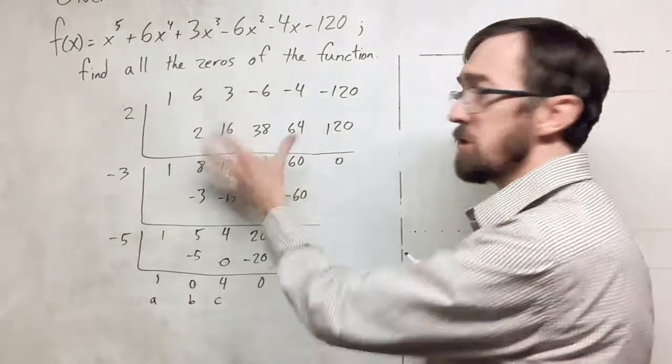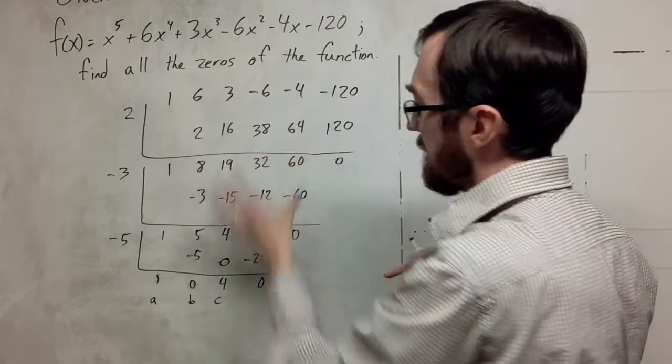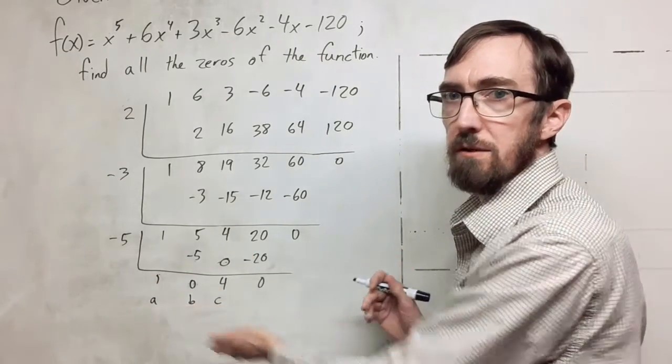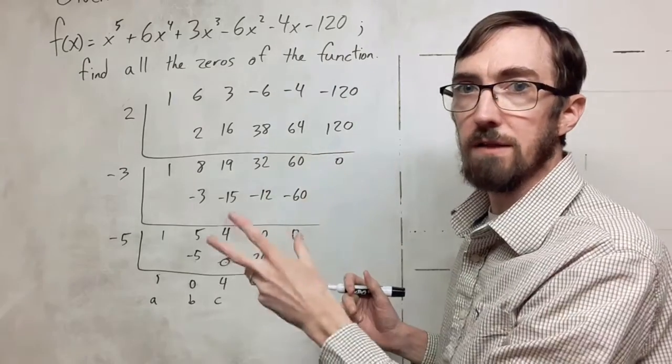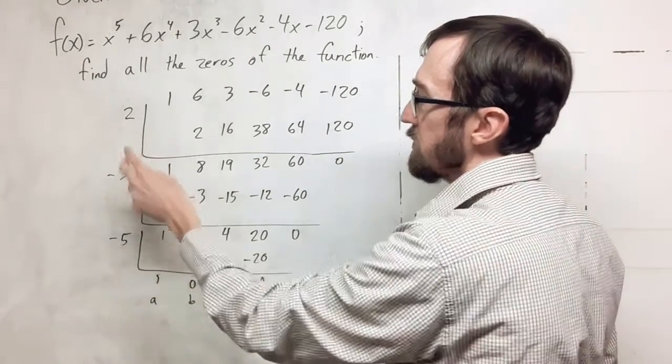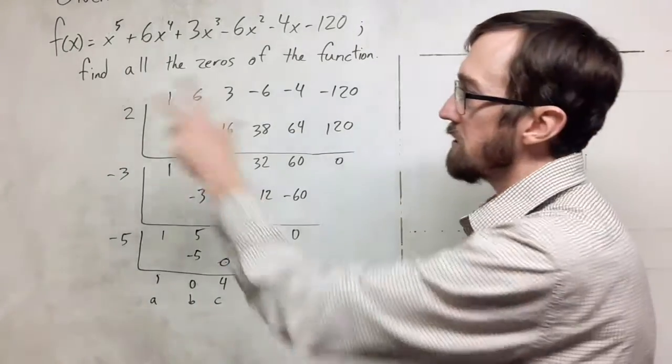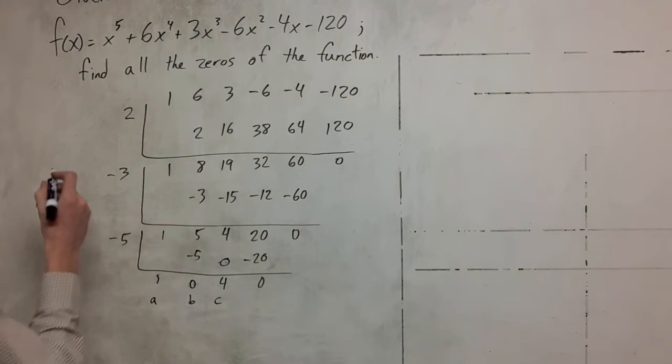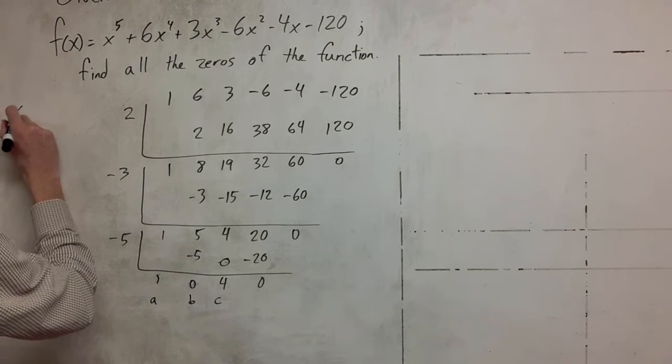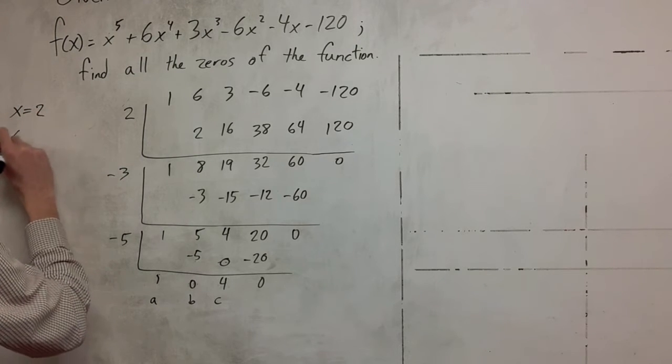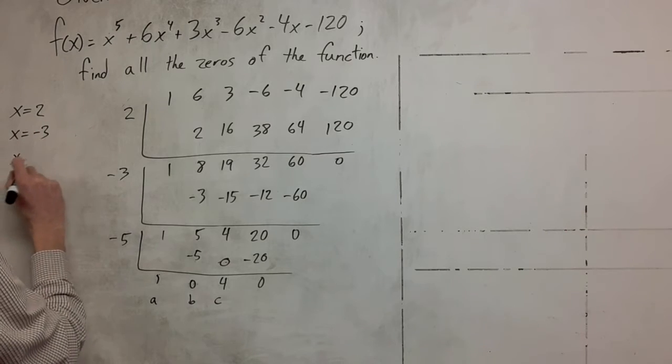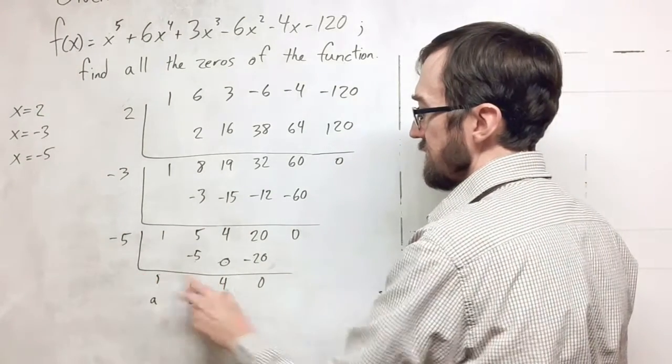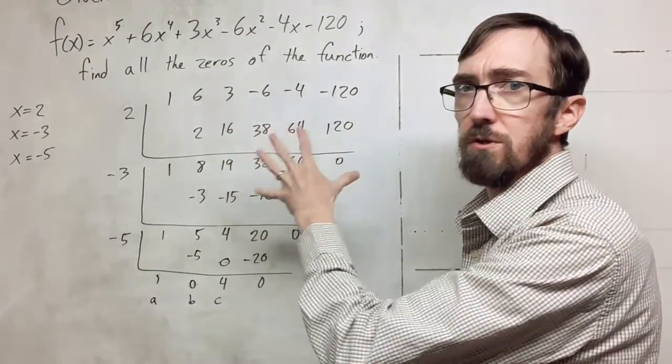So we don't have to continue with this strategy of the synthetic division. We can now use the quadratic formula with these as the A, the B, and the C and find the last two terms that we need. So we found 2, negative 3, and negative 5 here. So let me write out to the side what these factors are. And now I'm going to erase this and we're going to put the 1, 0, 4 into the quadratic formula.